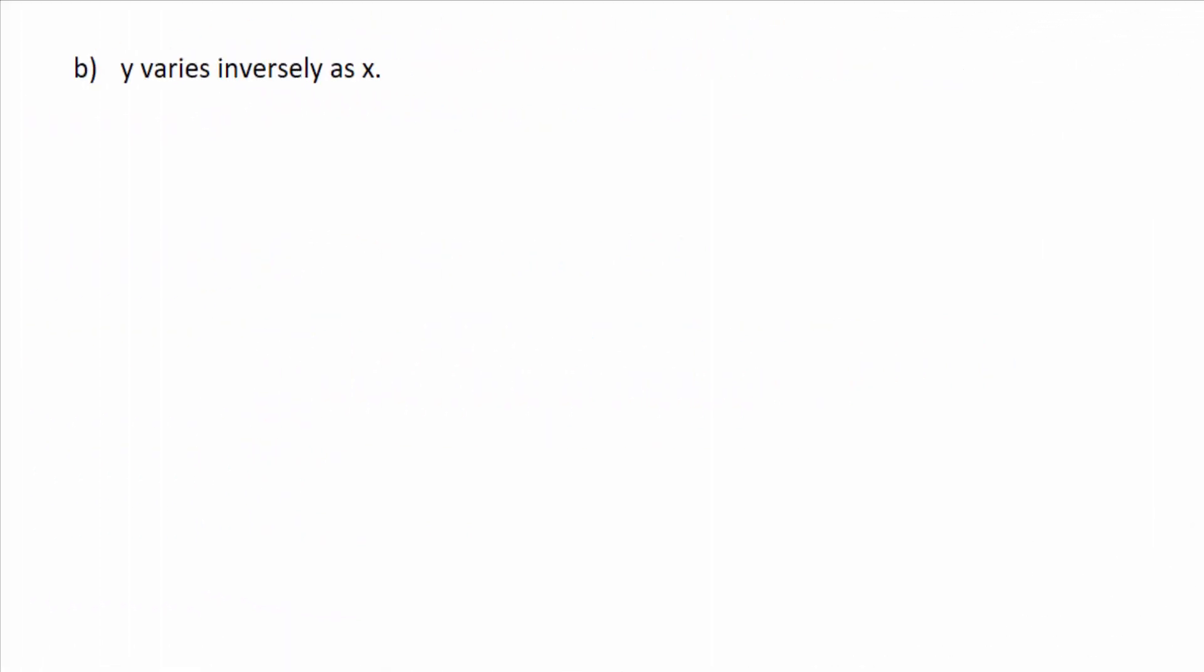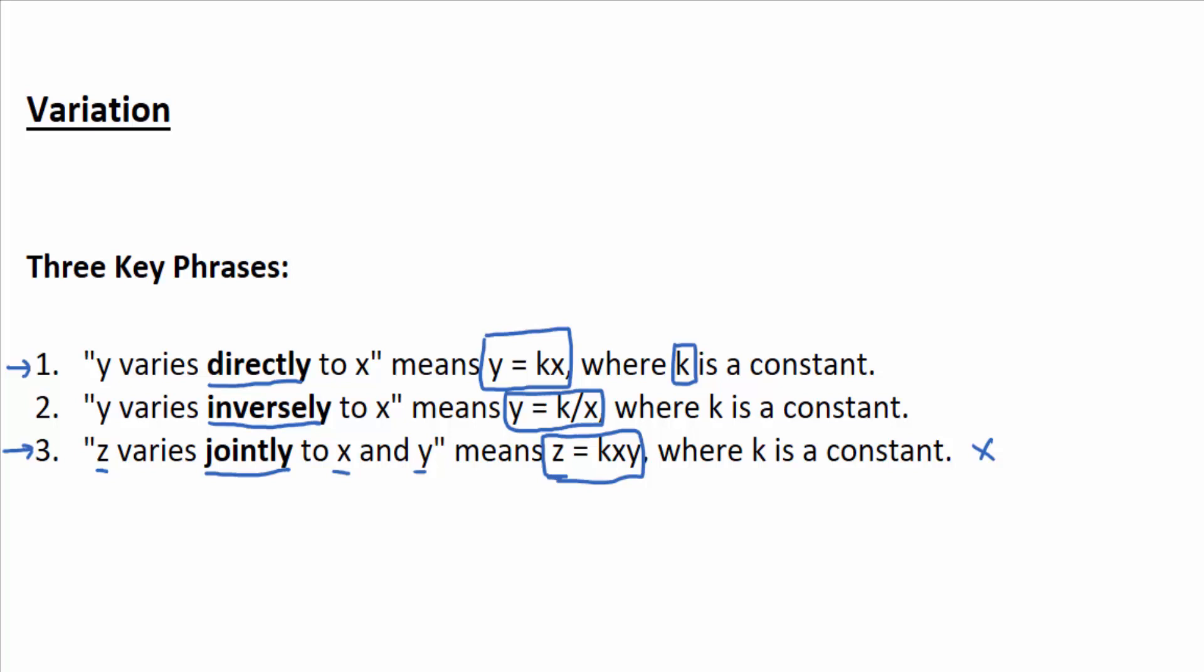What's the key word here in part B? Y varies inversely as x? Inversely. So if you don't have the words to symbols memorized, just go back up here. It's number 2. When you see y varies inversely to x, then that means y equals k divided by x.